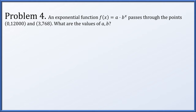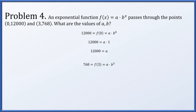Problem 4. Again we have an exponential function a times b to the x, with b positive and not equal to 1, passing through two explicit points. Since f(0) = 12,000, we get a equals 12,000. Since f(3) = 768, dividing by a gives b cubed equals 8/125, and the cube root of that is 2/5.